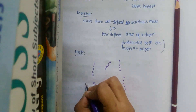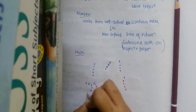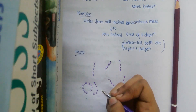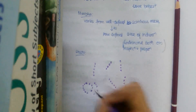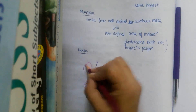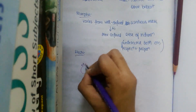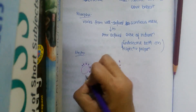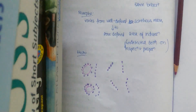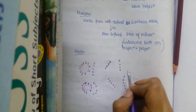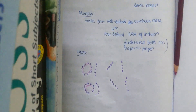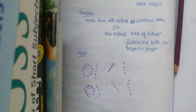Some of the infiltrating cells are also arranged concentrically around ducts — imagine a duct with tumor cells arranged around it concentrically. So the two patterns are: a linear or Indian file arrangement, and a concentric arrangement surrounding a duct.